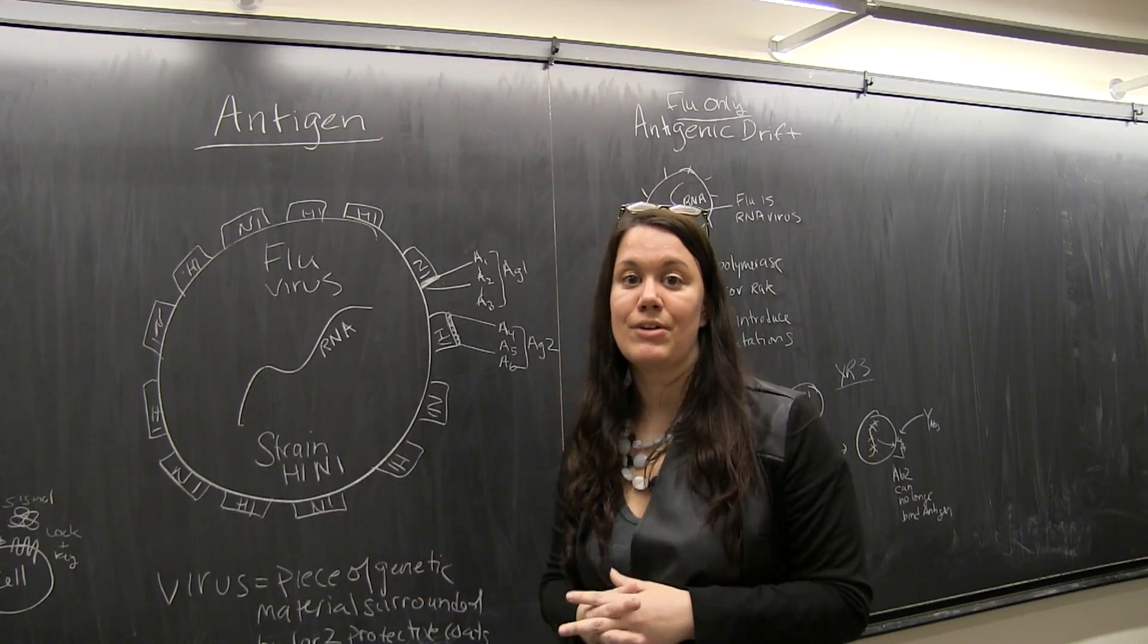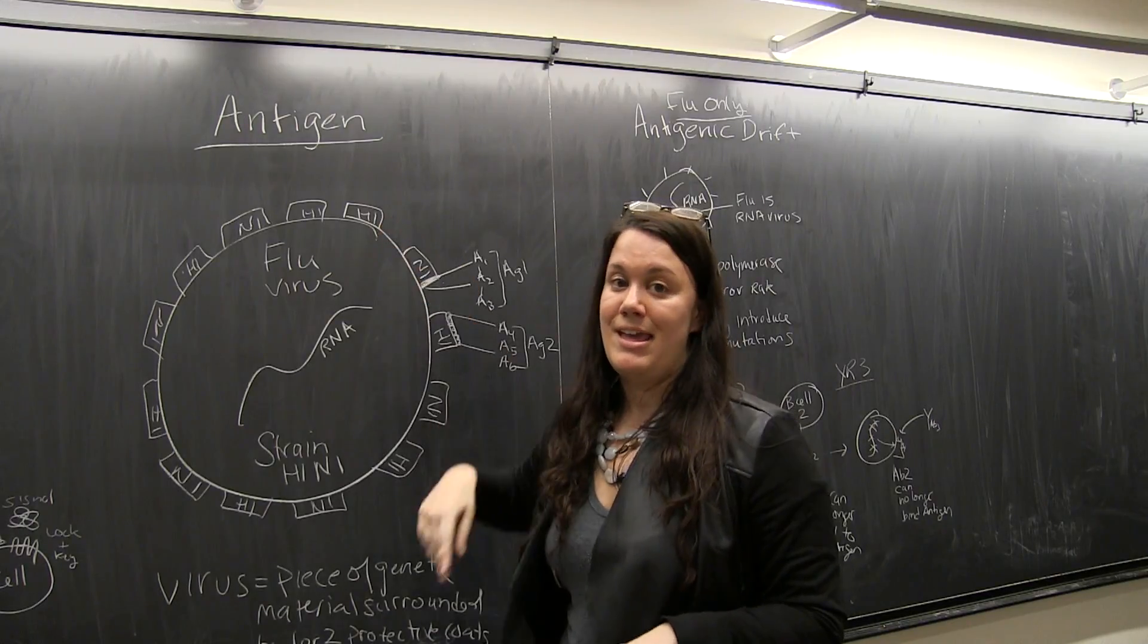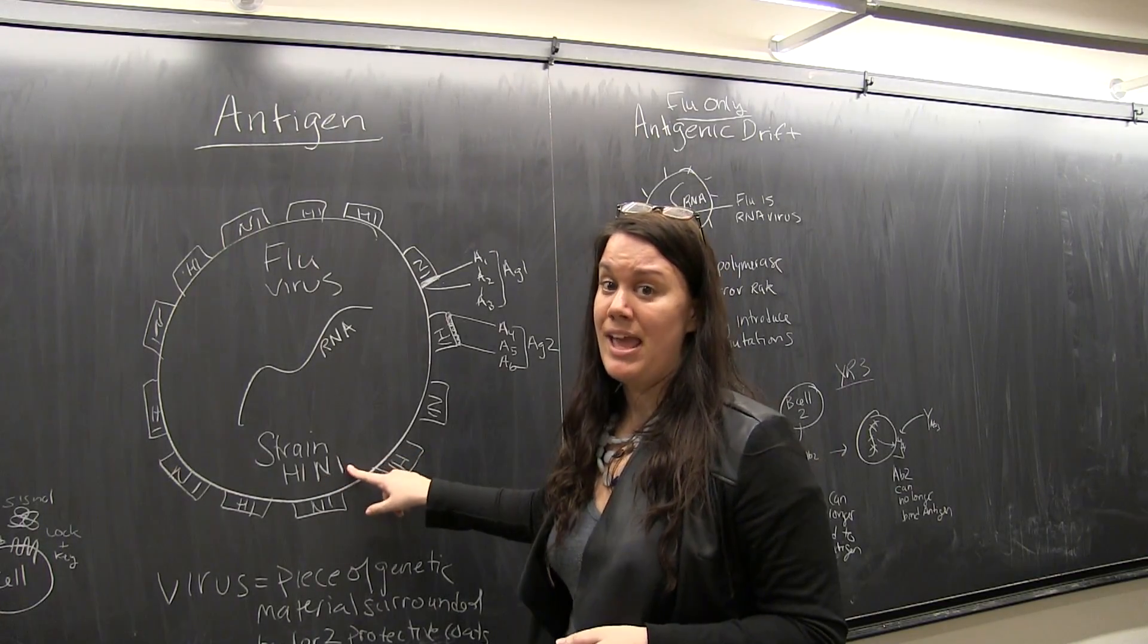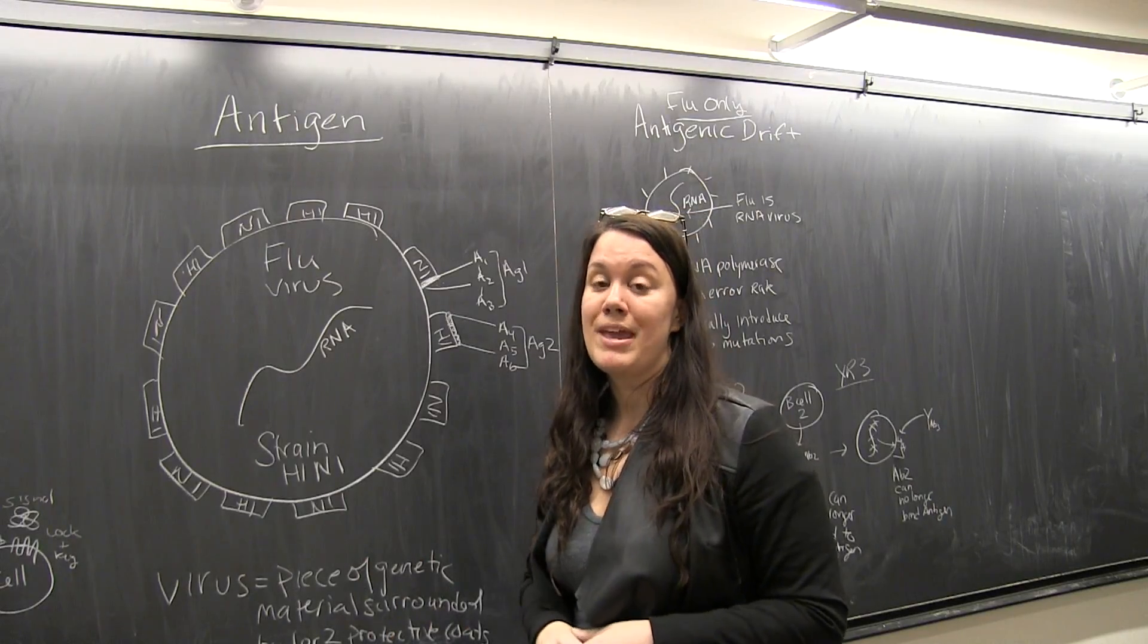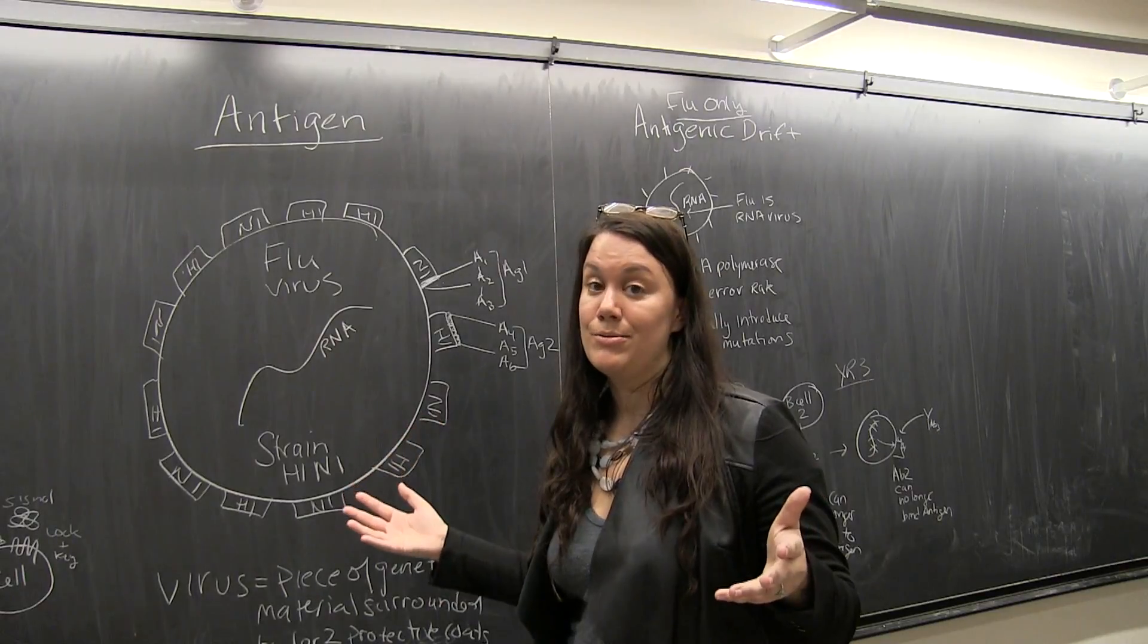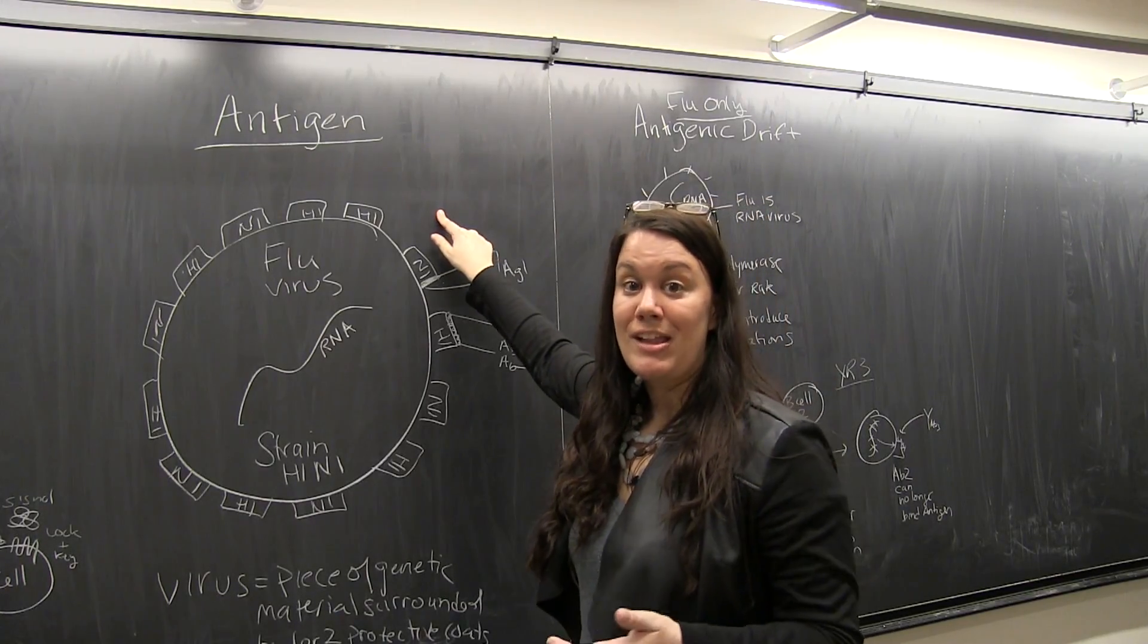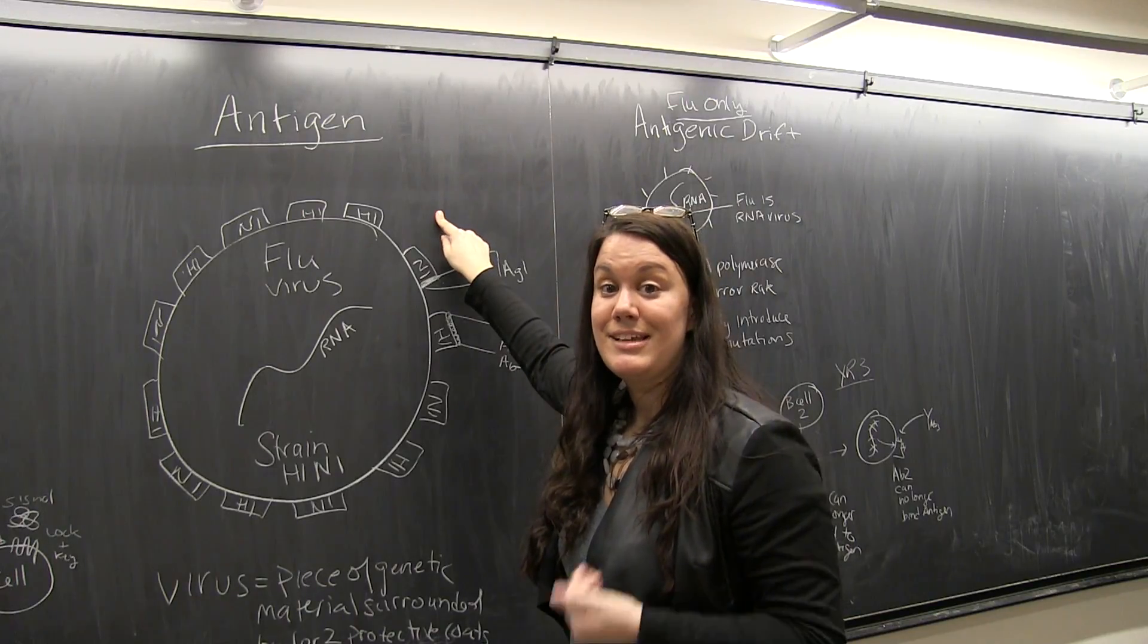There are all different kinds of combinations, so we can think of flu as having this H and N classification. And in particular we're looking as an example at H1N1. That means that all of the different spike proteins are made up of the class, the subclass H1 and N1. So that's the only class you'll find on the surface. So remember these membrane spike proteins are like receptors, so they're proteins and they're made up of a chain of amino acids.